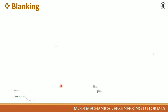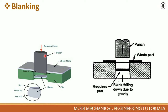Let's start with blanking operations. The green portion in the figure is known as the die, shaped according to the required shape and size. The sheet metal rests on the die and the punch is on top. By the blanking force, the punch moves from top to bottom and the sheet metal is sheared out according to the shape and size of the punch and die. This cut-out part is the required product.